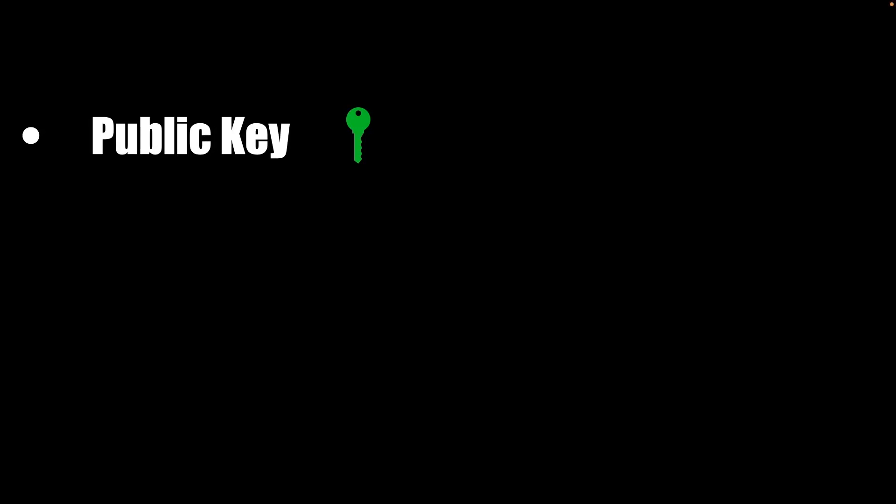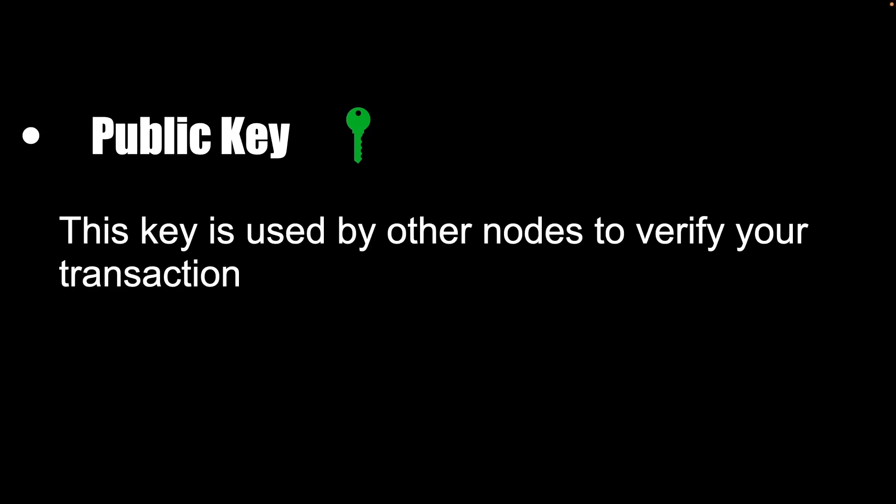The second type of key is the public key. We can share this public key with other nodes. This public key is used by other nodes to verify the transaction. A public key is basically your identity on the blockchain — your wallet address. It is derived from the private key by running some type of encryption on top of it. We can create a public key from the private key, but we cannot create a private key from the public key.